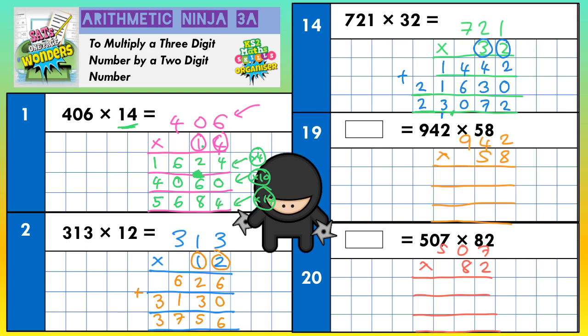The next one: 942 times 58. The top line is for the 8, the second line is for the 5 which means 50, and the bottom line adds everything together. Top line: 8 twos, 8 fours, 8 nines in that order. 8 twos are 16 — put the 6 in, carry the 1. 8 fours are 32, plus the 1 is 33 — put the 3 in, carry the 3. 8 nines are 72, plus the 3 is 75.